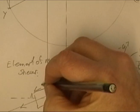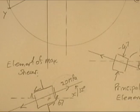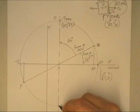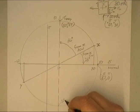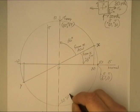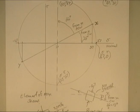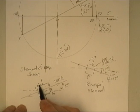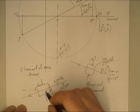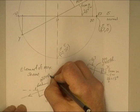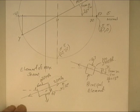The other side: the normal stress on that face I get from the other side of the circle. This point here is (20, minus 67). My shear stress is minus 67 and my normal stress is 20, so that will be 20 megapascals. And that's my maximum shear element.